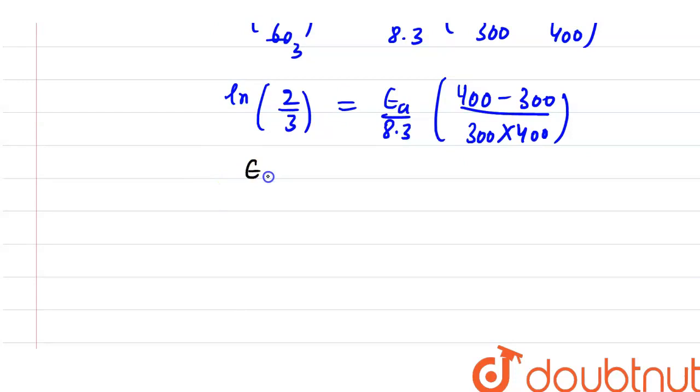It is equal to: Ea = log(2/3) × 8.3 × [120000/100]. So 100 will cancel out, so Ea = log(2/3)